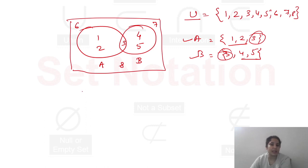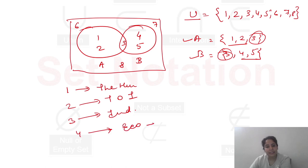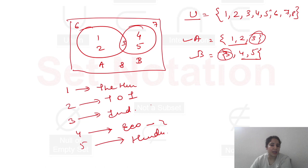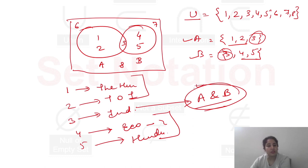अब यह चीज़ और समझते हैं — suppose 1 को नाम दे दो The Hindu newspaper, 2 को Times of India, 3 को Indian Express, 4 को Economics Times, और 5 को Hindustan Times। तो A group यह दोनों newspaper पढ़ता है, B group यह दोनों newspaper पढ़ता है, और third newspaper — Indian Express — A and B दोनों group पढ़ते हैं। कौन से newspaper A and B दोनों नहीं पढ़ते? वो है 6, 7 and 8 number के newspapers। यह easily आप Venn Diagram के through समझे।